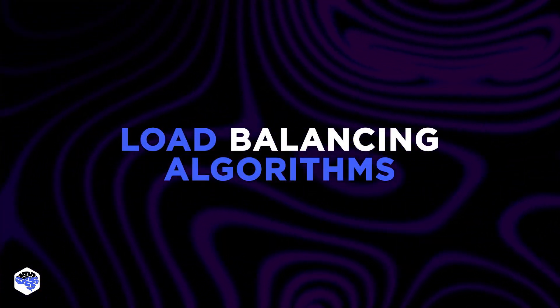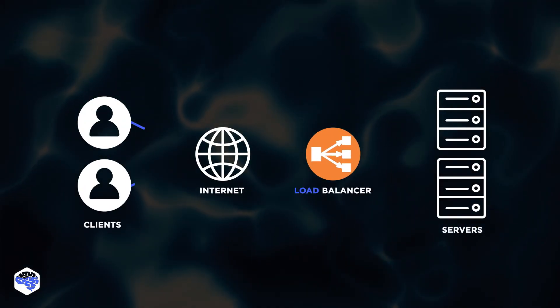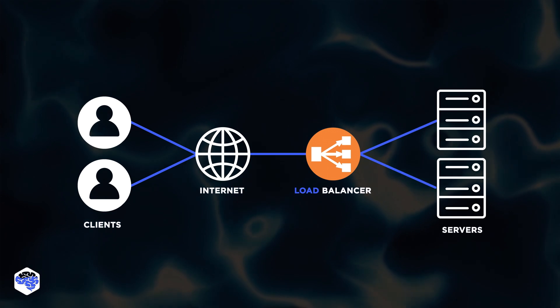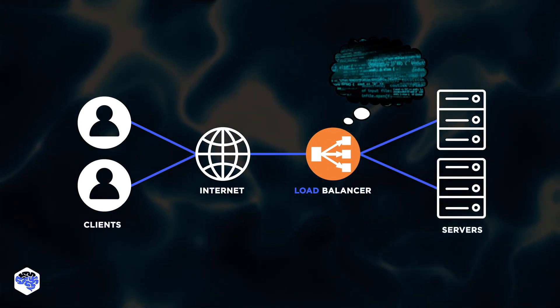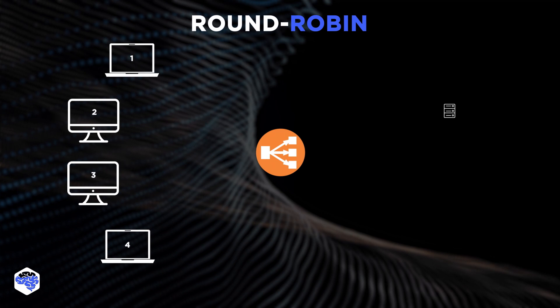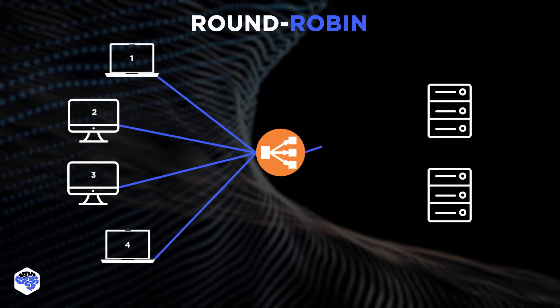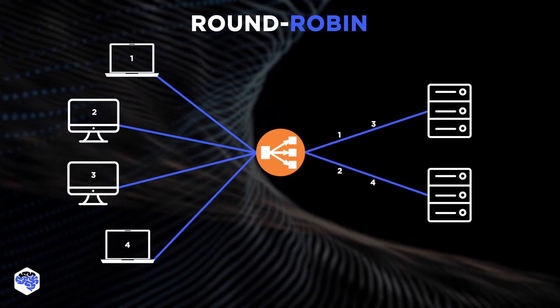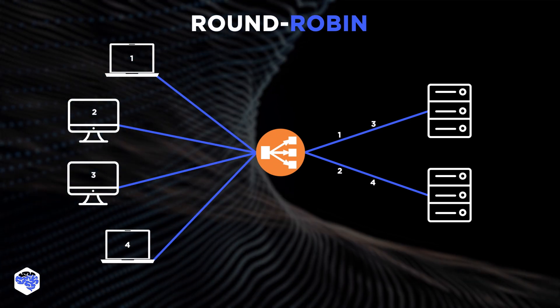Let's look at the basic load balancing algorithms. The load balancer directs traffic to a pool of servers using various algorithms — formulas that determine which server to send each client connection to. The Round Robin algorithm uses a rotation system to sort traffic when working with servers of equal cost. The request is passed to the first available server and then placed at the end of the line.